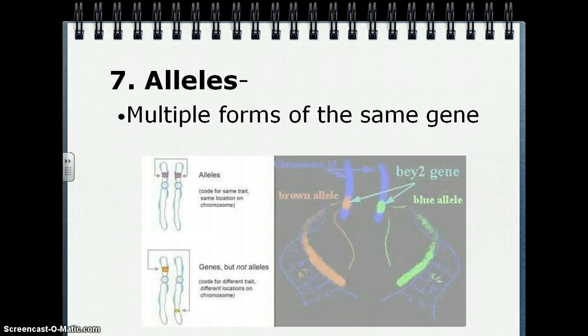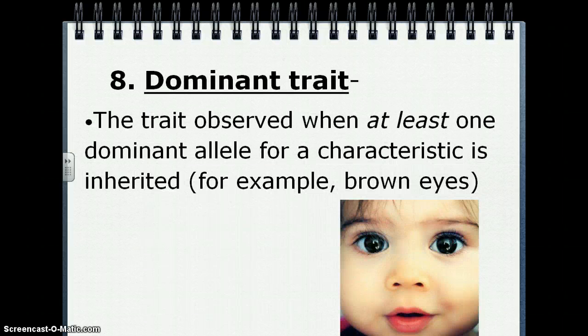Alleles are multiple forms of the same gene. Dominant trait is the trait observed when at least one dominant allele for a characteristic is inherited. For example, brown eyes are a dominant trait.